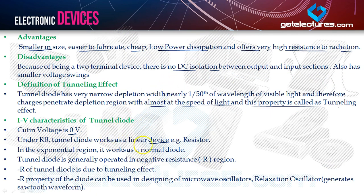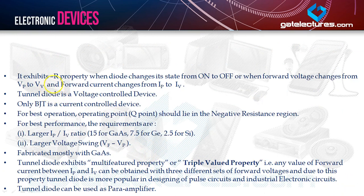Under reverse bias, the tunnel diode works as a linear device — for example, a resistor. In the exponential region, it works as a normal diode. The tunnel diode is generally operated in the negative R region. The minus-R property is due to the tunneling effect and can be used in designing microwave oscillators and relaxation oscillators, which generate sawtooth waveforms. It exhibits negative R when the diode changes state from on to off — when forward voltage changes from VP (peak voltage) to VV (valley voltage).